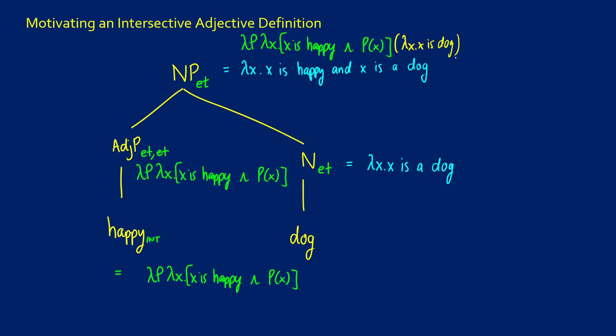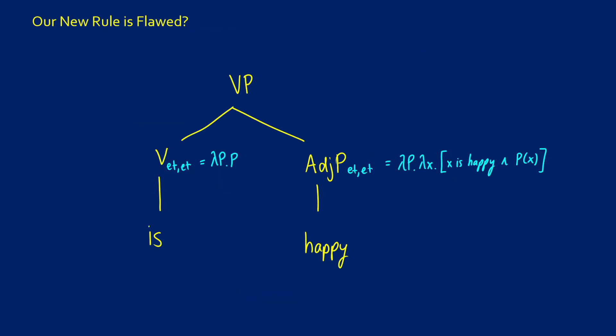So that's going to come out super nicely. We've now determined that intersective adjectives can be used as an ET ET. That's how we're going to define it. That encodes the meaning great. Well, actually, it's not great because we're going to run into an issue with things like is happy, which is the predicate adjective form because if we remember what is is, this is lambda P dot P. This is an ET ET. But the adjective phrase that we just said that is intersective is supposed to now be ET ET.